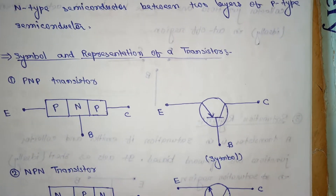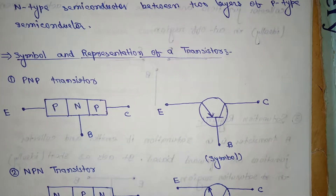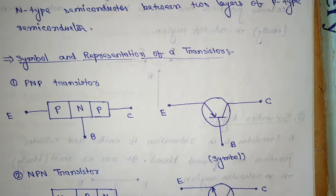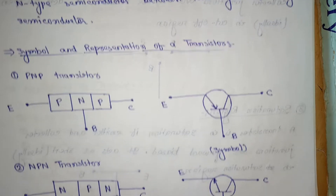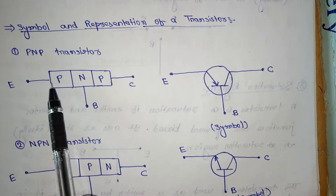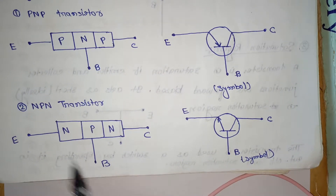This is the symbol and the representation of a transistor. First one: NPN transistor. The PNP transistor consists of a layer of N-type semiconductor between the two P-type layers. This is the symbol for the PNP transistor and this is the symbol for the NPN transistor.